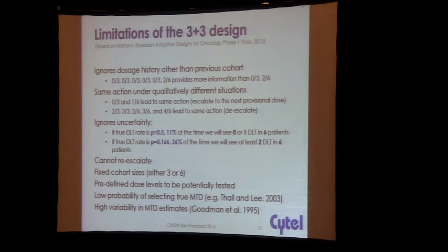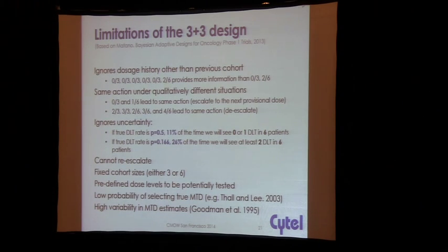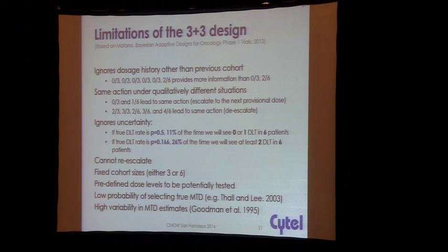It also ignores uncertainty. If the true DLT rate is 0.5, using basic binomial distribution theory, you'll naturally see 0 or 1 DLT in 6 patients about 11% of the time. So you have a 1-in-10 chance of actually escalating even though there's 50% toxicity. Similarly, if the true DLT rate is quite low — 0.166 — you have a 26% chance of actually de-escalating because you'll see at least 2 DLTs out of 6. This is problematic because you're either putting patients at risk or missing a potentially good drug.